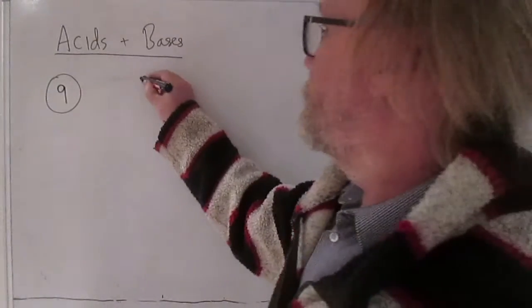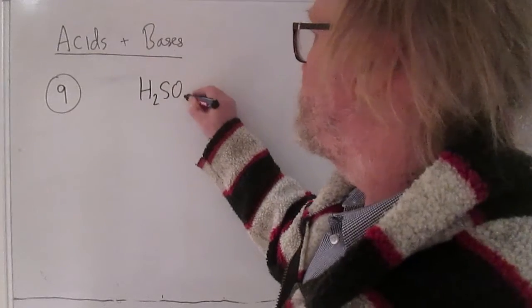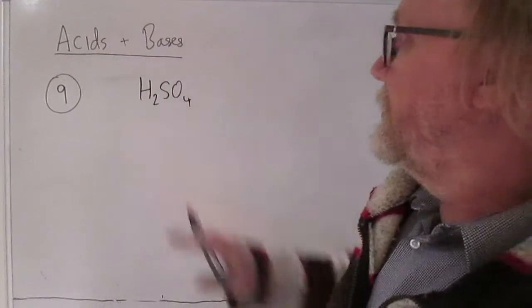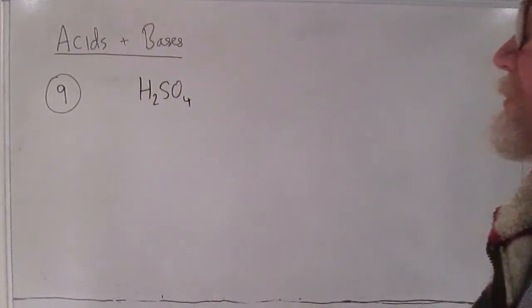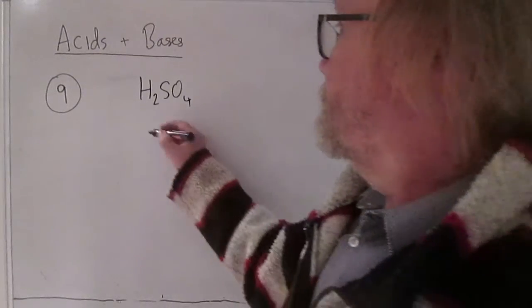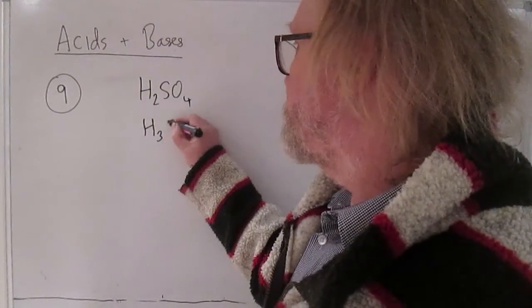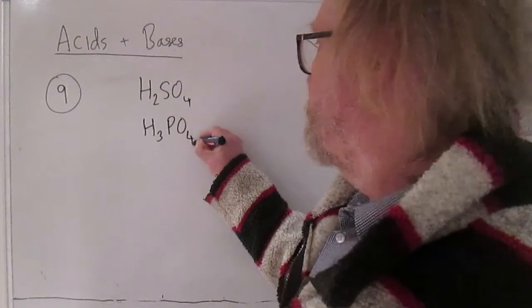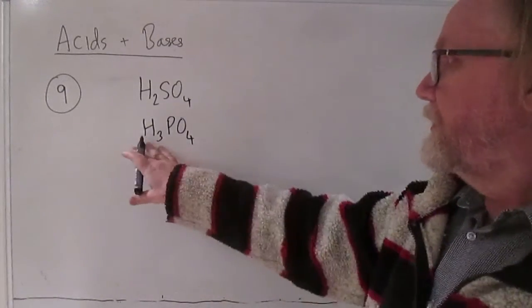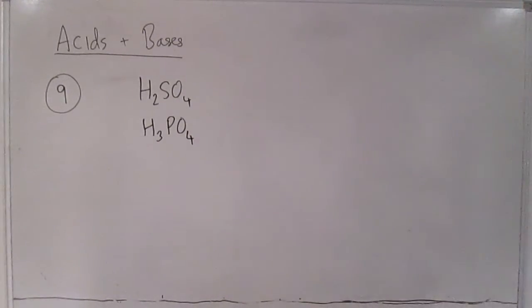So sulfuric acid is, as it says, a dibasic acid because there are two ionizable hydrogens per molecule.